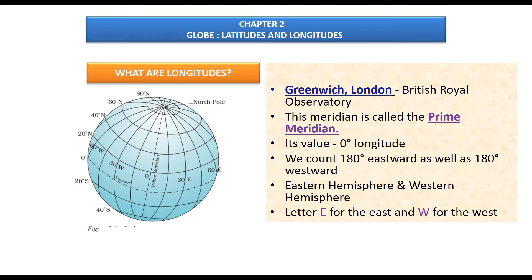Why did countries choose Greenwich as the Prime Meridian? Do some self-research and ask in the comments if you can't find the answer. The Prime Meridian has a value of zero degrees longitude. From it, we count 180 degrees eastward and 180 degrees westward. The Prime Meridian and the 180-degree meridian divide the earth into two halves: the Eastern Hemisphere to the east and the Western Hemisphere to the west.